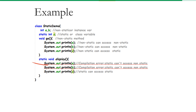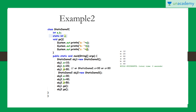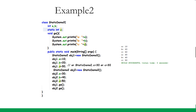Now let us see the display() function, which is static. Static can access only static, because at class compilation, non-static variables and methods have not yet received memory — they get memory at runtime when objects are created. So in display(), a is not static so it cannot be accessed, b is not static so it cannot be accessed, but c is static so it can be accessed. Lines one and two will give a compilation error.